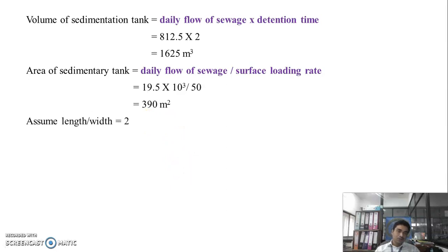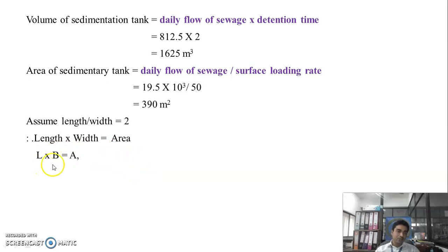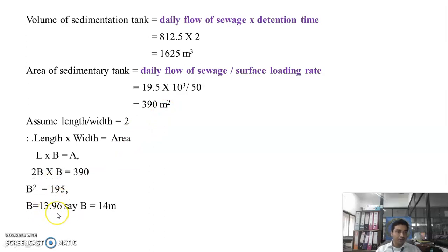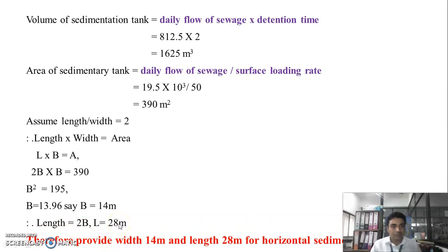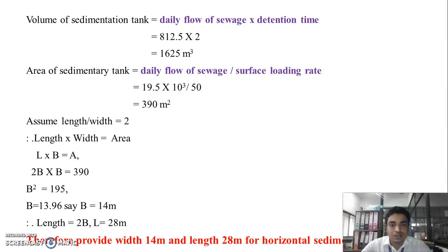Assume length to width ratio of 2. So L × B = area, meaning 2B × B = 390, giving B² = 195, so B = 13.96 meters, approximately 14 meters. Therefore length = 2 × 14 = 28 meters. In this way, we calculate the length and width: width = 14 meters and length = 28 meters for the horizontal type sedimentation tank.